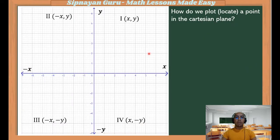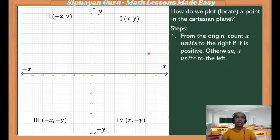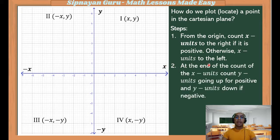So how do we plot or locate a point on the Cartesian plane? These are the steps: First, from the origin, you will count x units to the right if x is positive, and if it is negative, you will count x units to the left. Then, at the end of counting the x units, you will count y units either going up if it is positive, and going down if it is negative.